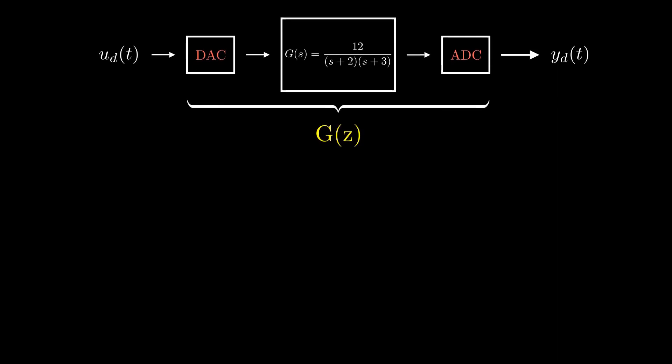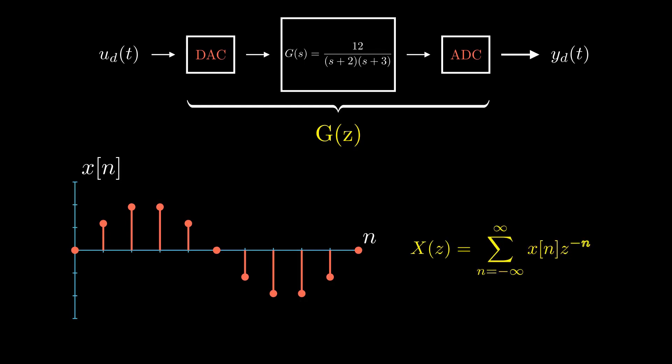For those who are unfamiliar with z-transform, consider a discrete signal x[n]. The z-transform of x[n] can be written as X(z) equals to the sum from negative infinity to positive infinity of x(n) times z to the power negative n.